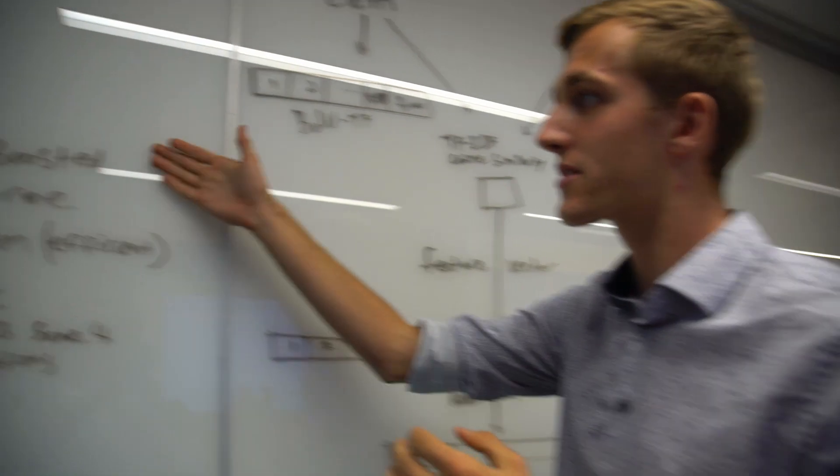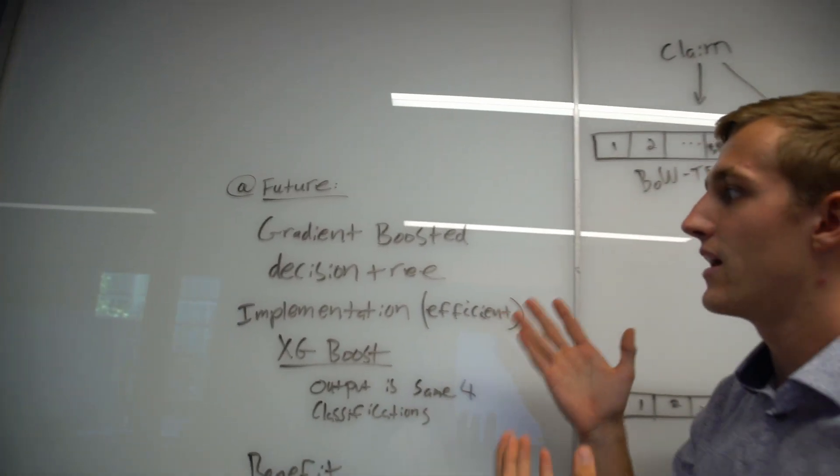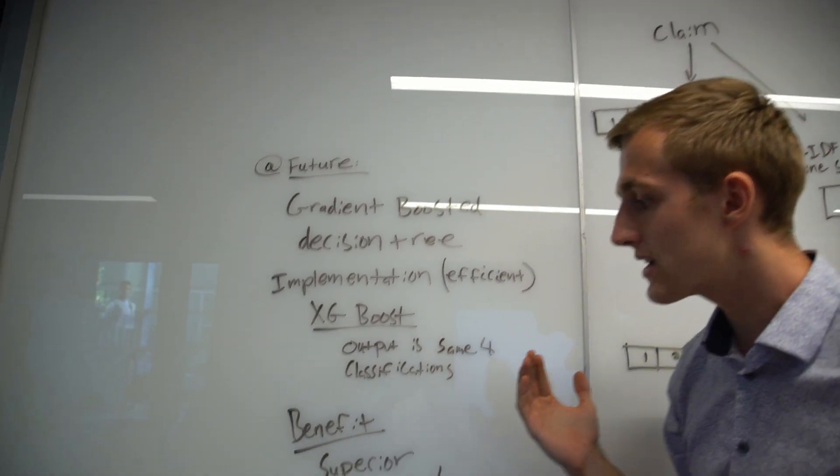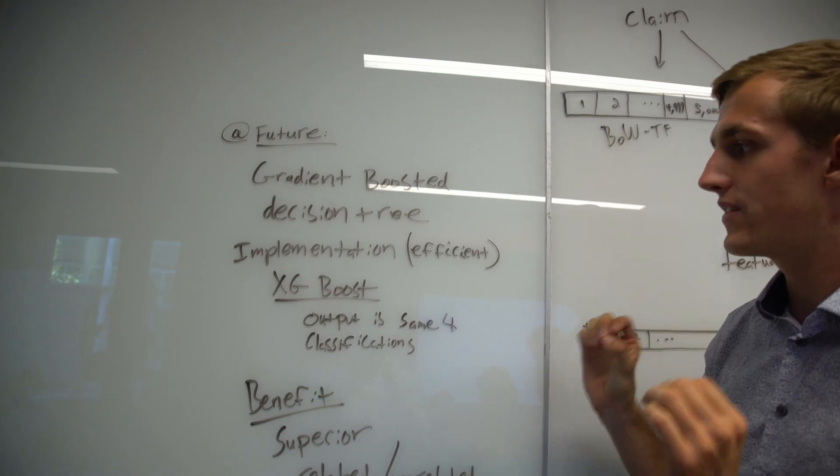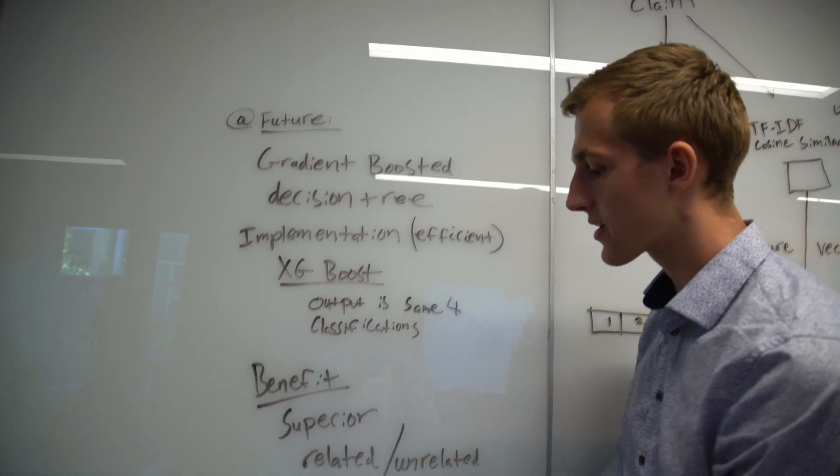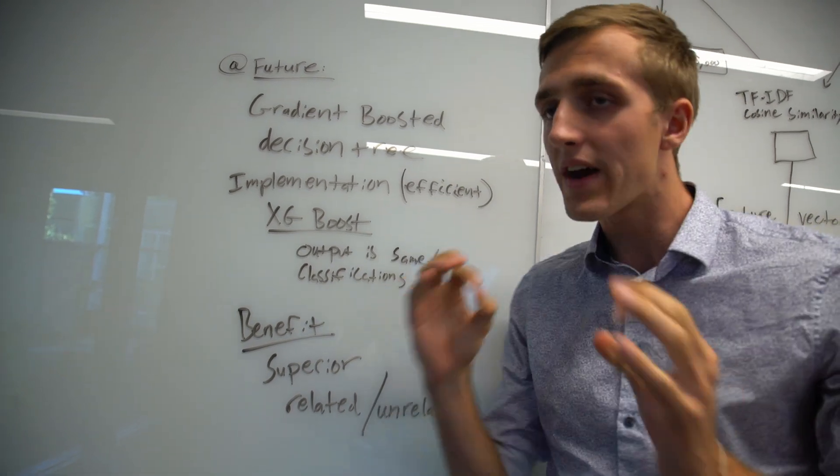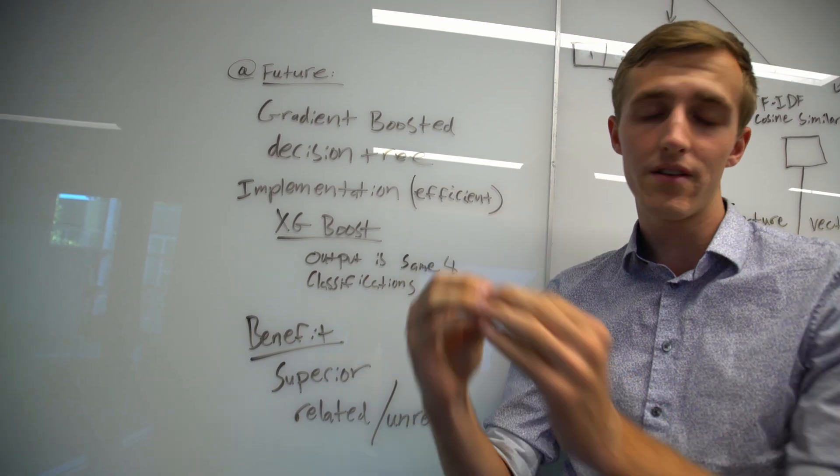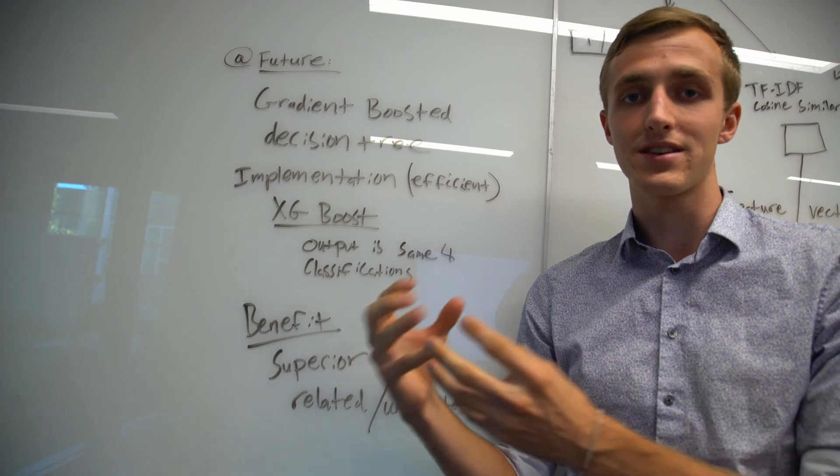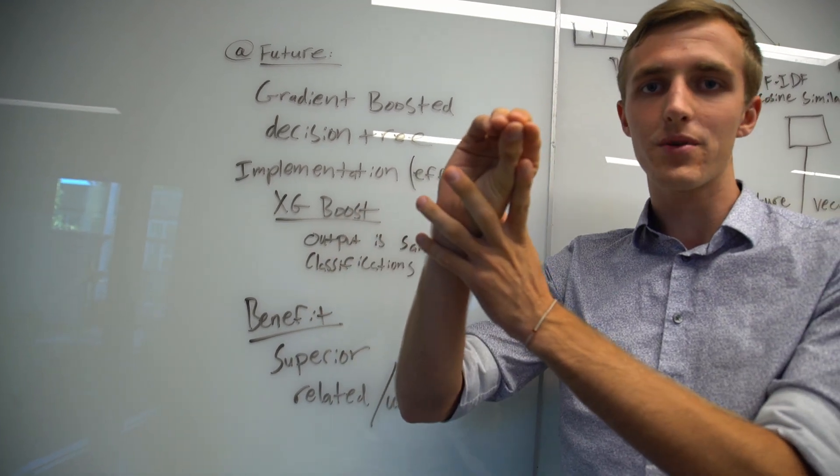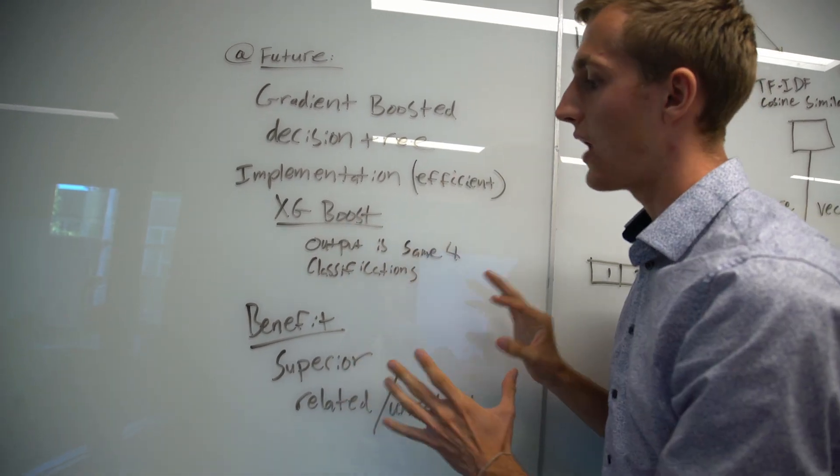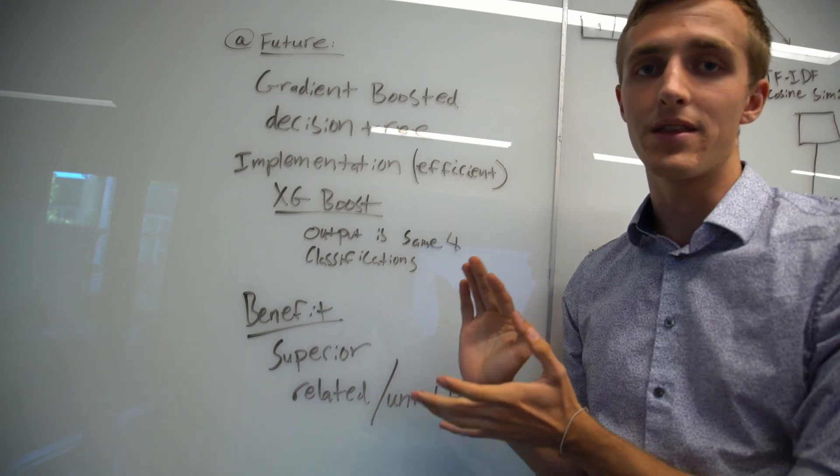However, there are some things we'd like to do in the future. We would really like to implement a gradient boosted decision tree. The benefits would be superior related or unrelated classifications. It's very important that we have all of our articles be very relevant to our claim so we can actually say relevant articles agree with our claim, and I think this will help us be even more accurate than we currently are.